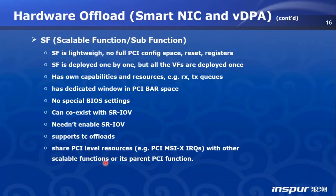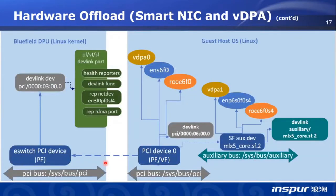A VF is a PCI device with its own PCI address, but an SF is not a PCI device. It shares PCI-level resources with its parent PCI device, such as PCI MSI-X and IRQs. SF is an auxiliary bus device. It has a VDPA port, a NetDev port, and an RDMA port. A PF or VF can also have these ports.